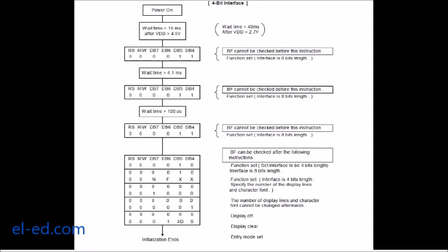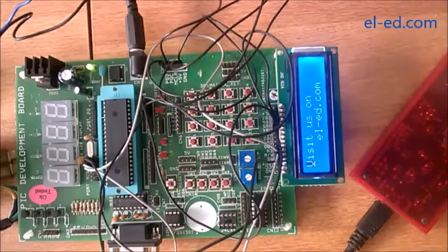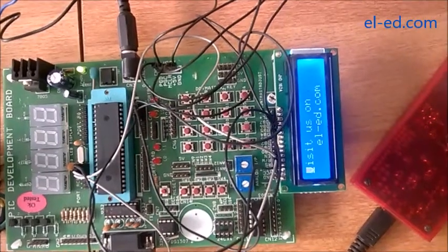For the first 3 times you have to set the interface length as 8 bits. Then you have to change the interface length to 4 bits, then select the number of lines and fonts to be used, and then complete the entry mode set procedure.